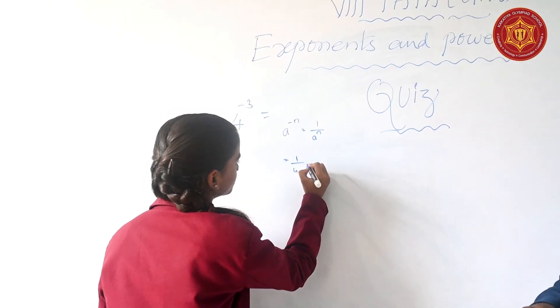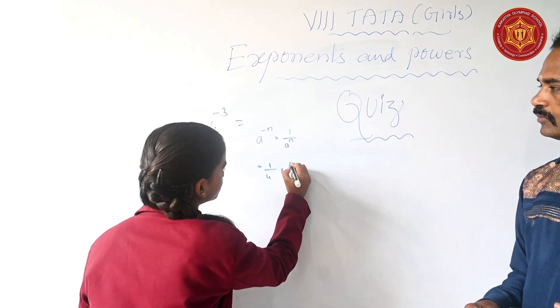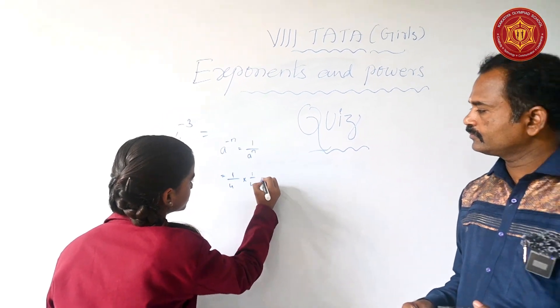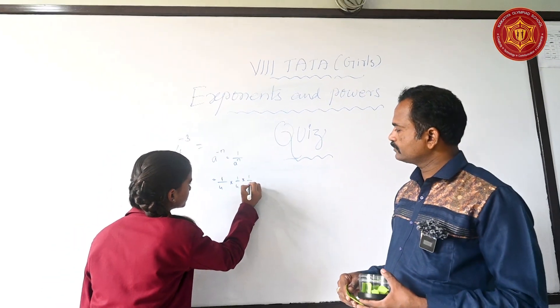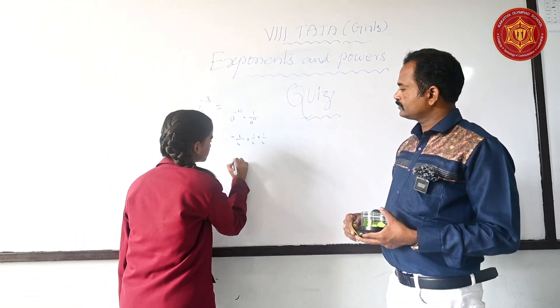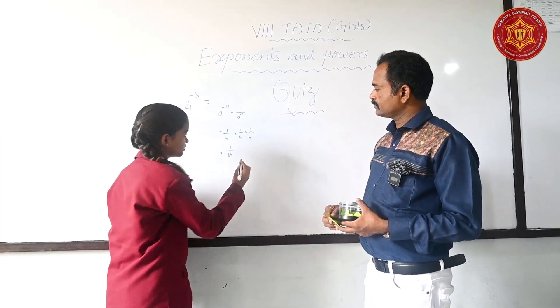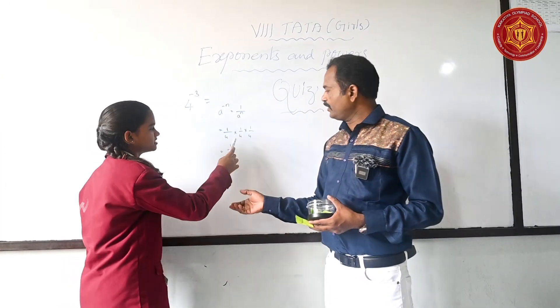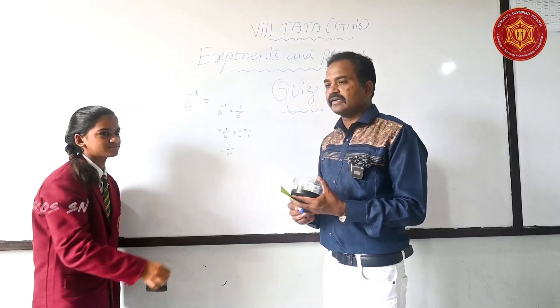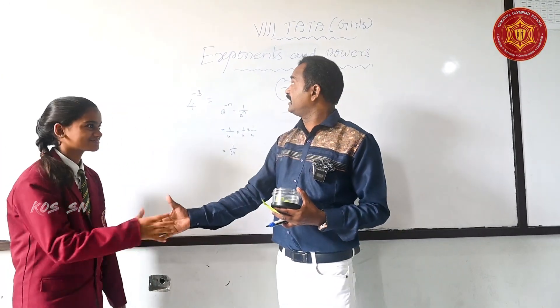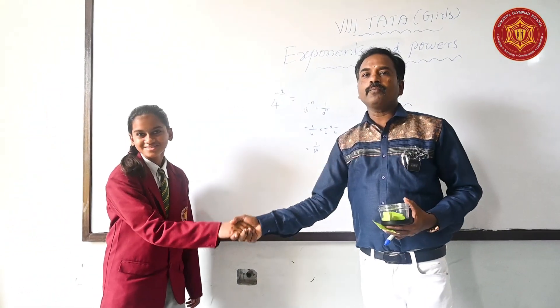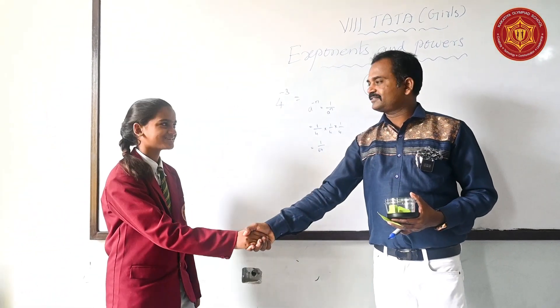1 by 4 into 1 by 4 into 1 by 4 equals 1 by 64. Very good, it is an excellent answer given by UK Group. Congratulations.